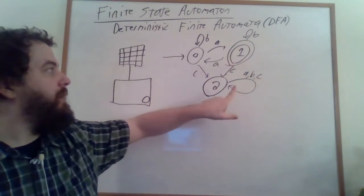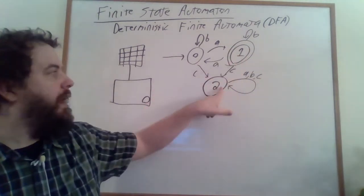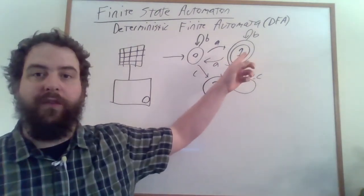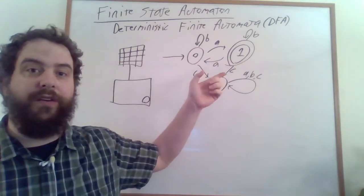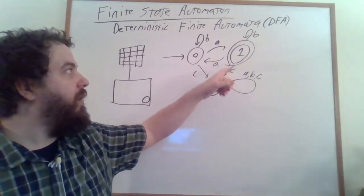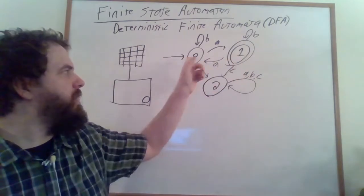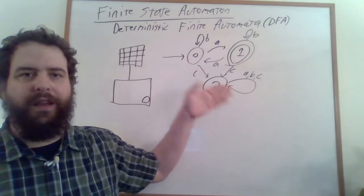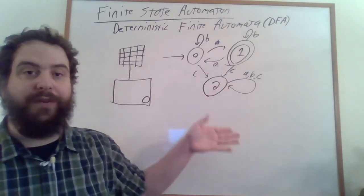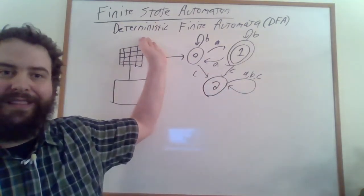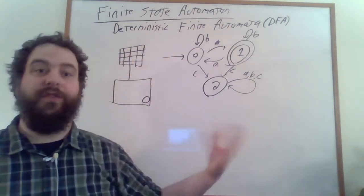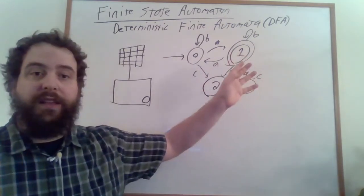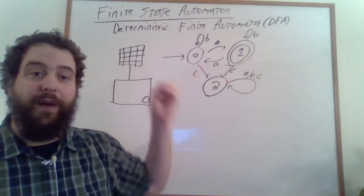For each state, we can only have one arrow coming out of that state for each character, because we don't want to say — oh, well, if we're in state 1 and we read an A, do we go to 0 or do we go to 2? We don't want that sort of confusion. We want it to be well-defined in its behavior — that is, we want it to be deterministic. There's no uncertainty, there's no randomness in its behavior. So for each state, if we read in a particular input, we're going to wind up in a particular state in a well-defined way.